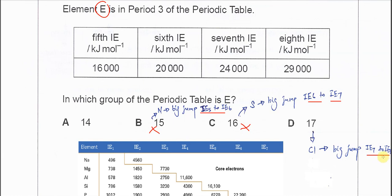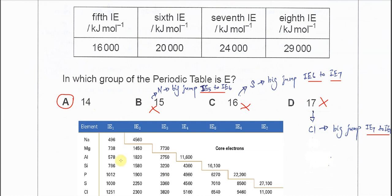For option D, if it's group 17, there should be a big jump between the seventh and eighth IE. Since there's also not really a big jump, it's not group 17. Therefore, the answer is A, group 14. Let's check the table.